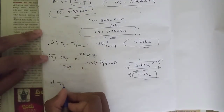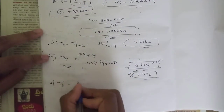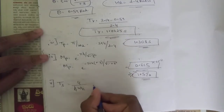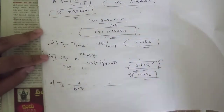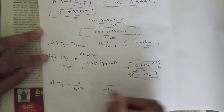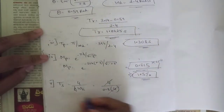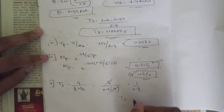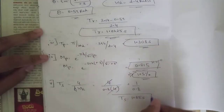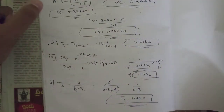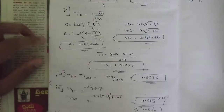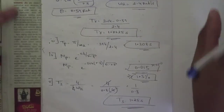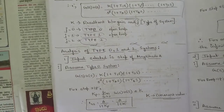For settling time ts, the formula is 4 / (ζωn) for a ±2% tolerance band. Substituting: ts = 4 / (0.8 × 4) = 4/3.2 = 1.25 seconds. We have now found all the time domain specifications: td = 0.39s, tr = 1.0625s, Mp = 1.5%, and ts = 1.25s.